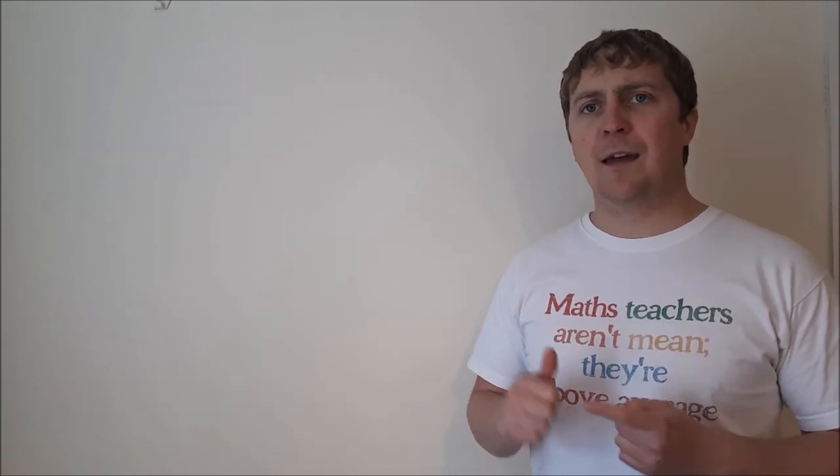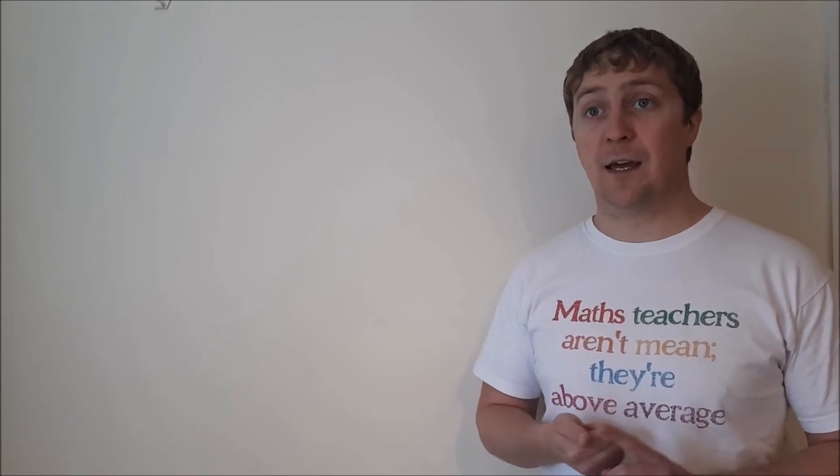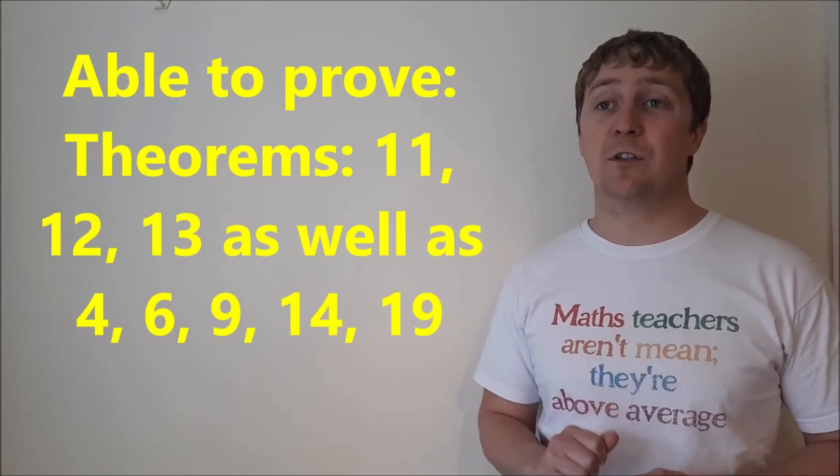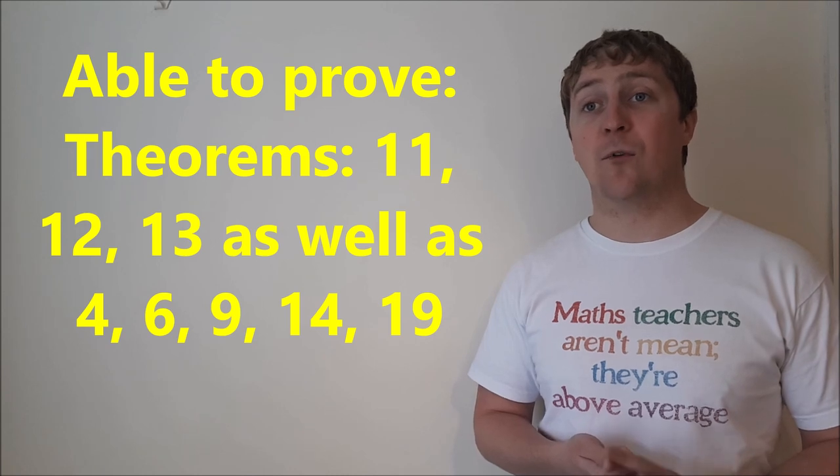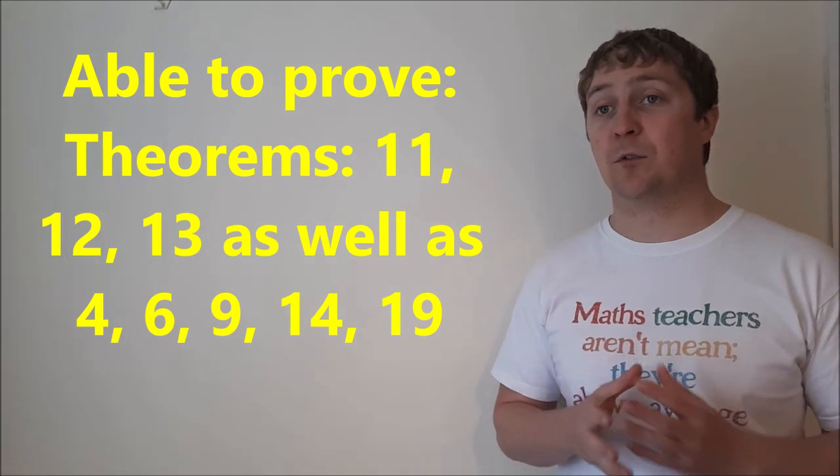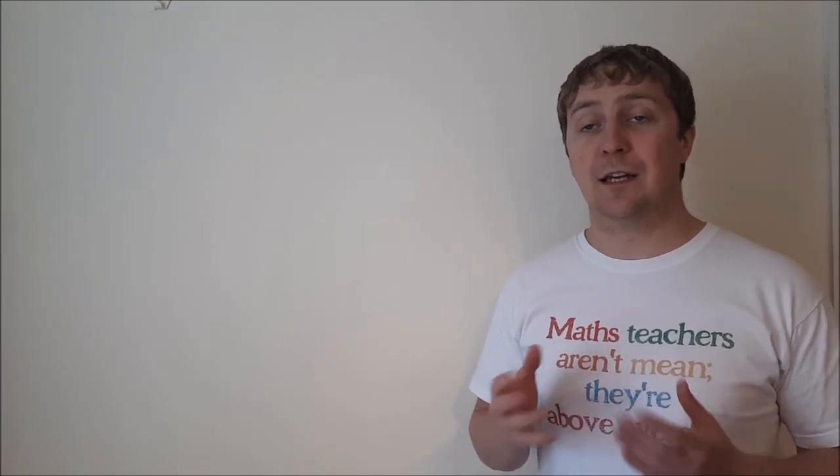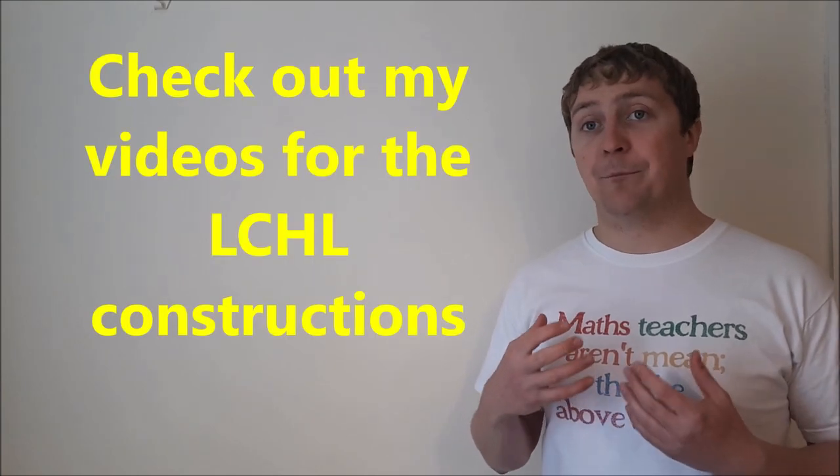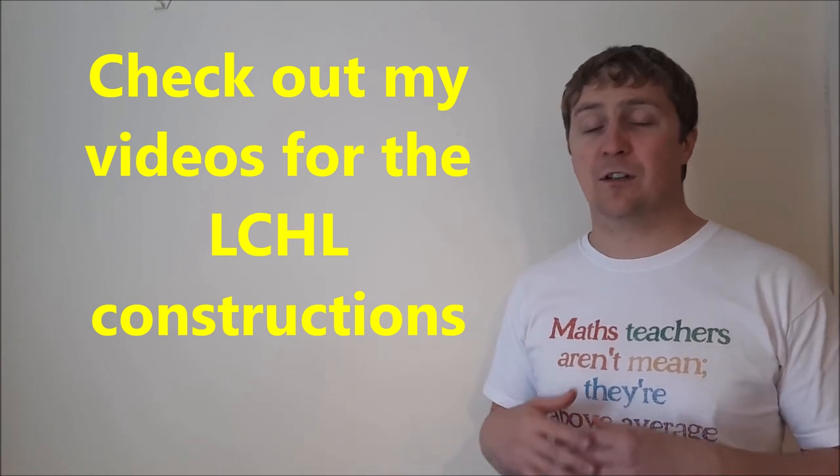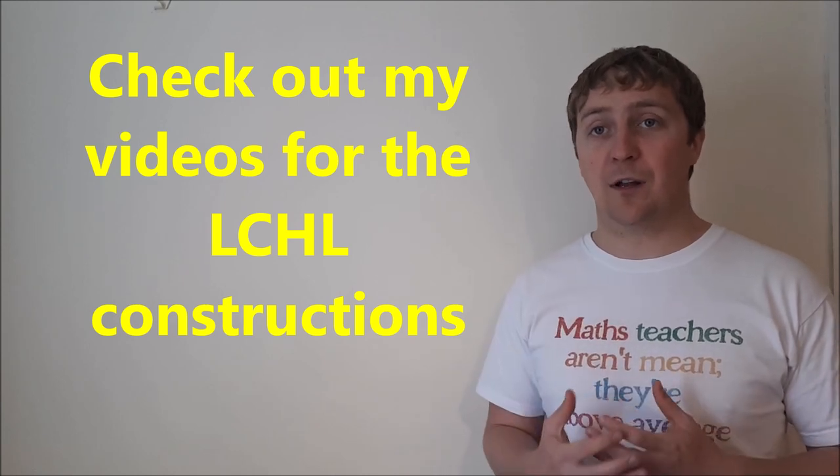And then we're on to geometry. We obviously have our proofs: Theorem 11, 12, and 13, but also you have your Junior Cert proofs which you could be asked—Theorem 4, 6, 9, 14, and 19—so you could be asked to do the formal proof of any of those. And we have our constructions that you should hopefully have gone through over the year and you can be asked to do any of those constructions as a standalone question or as part of another question.